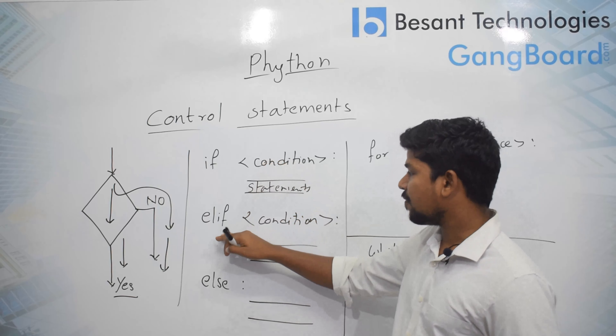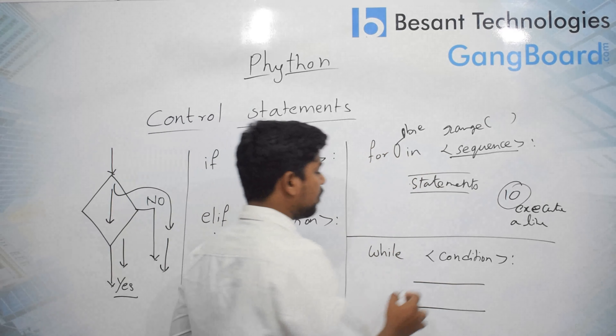We can use the range() function, to which you provide how many times the for loop needs to be executed. Based on that number, we can execute and control the number of lines executed in the for loop.